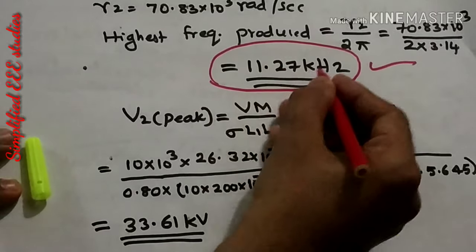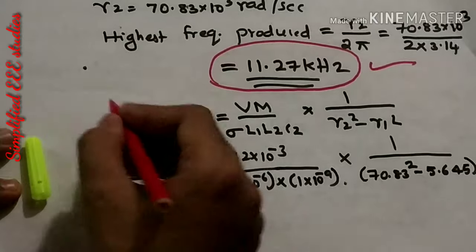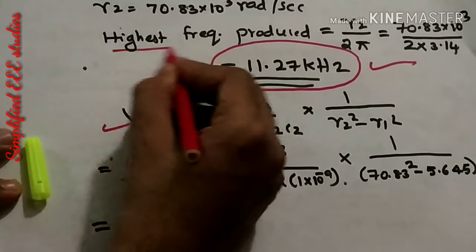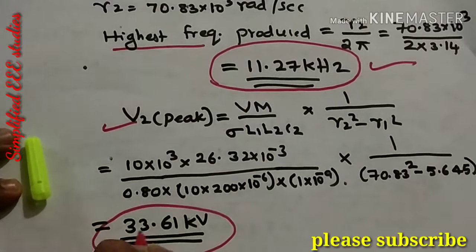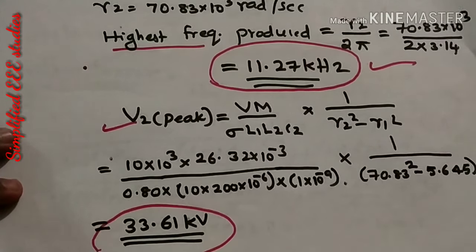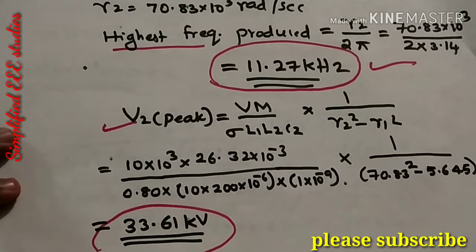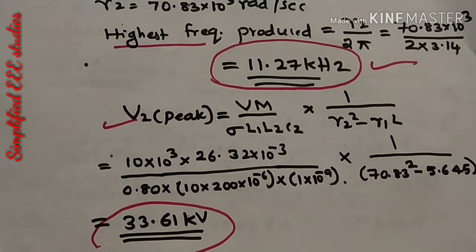To summarize: the highest frequency produced is 11.27 kilohertz, and V2 peak is 33.61 kV. Please practice this problem once again and verify the answers. Thanks for watching — please share with your friends, comment, and don't forget to subscribe.